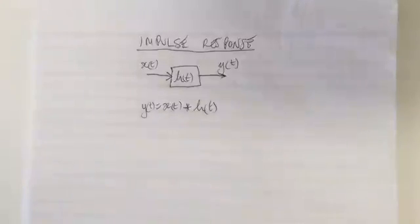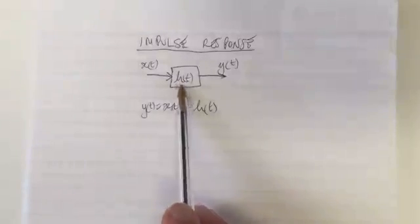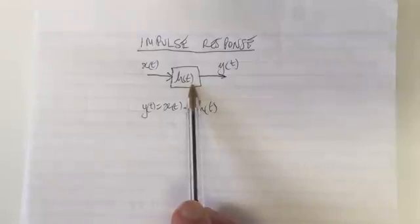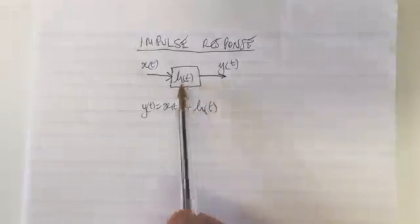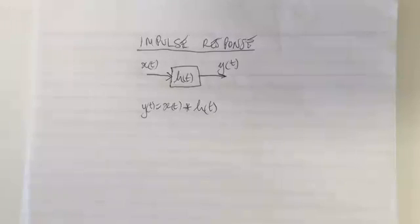I just want to cover the impulse response. So the impulse response of a system we call H(t), and it's the way the system would respond if an impulse was put into the system. A short, sharp input, and then how the system responds is called the impulse response.